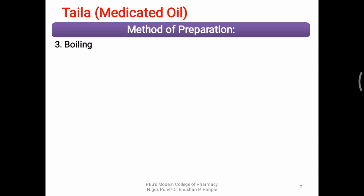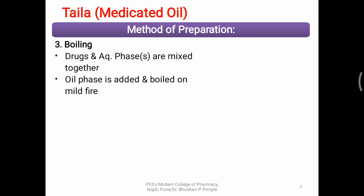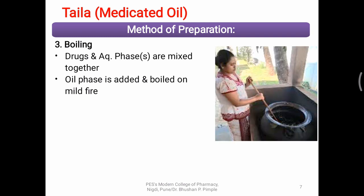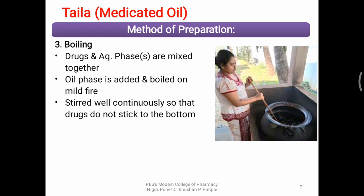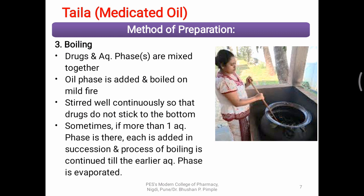The next step is boiling. Once the ingredients are collected and prepared, they need to be boiled. The active ingredients and the aqueous phase are mixed together first, then the oil phase is added and boiled on a mild fire. Continuous stirring is carried out so that the oil gets mixed into the aqueous phase. As oil is immiscible with water, the stirring combined with the presence of the drugs and heat helps the oil to dissolve into the mixture.